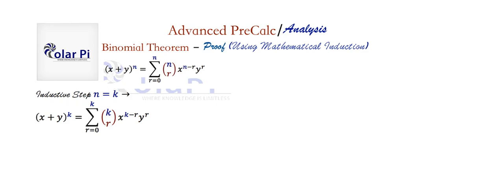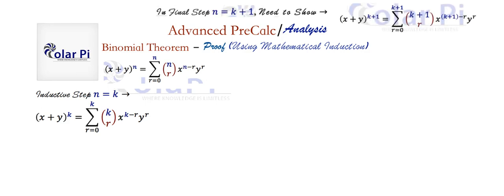And in the final step, where we let n equal k+1, we need to show that the binomial (x+y) to the power k+1 is equal to the right-hand side — which is basically the right-hand side where n is replaced with k+1. So our destination is this; this is where we want to get to in the final step of our inductive proof.